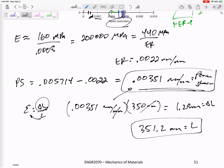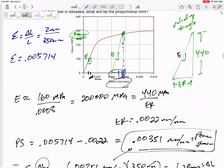And then lastly, if the bar is reloaded, what will the proportional limit be? So we mentioned this a little bit, but if you load something up to here and then unload it right here, then now its new stress-strain diagram is this pink curve right here. That's its new stress-strain diagram. It's almost like you throw away that.